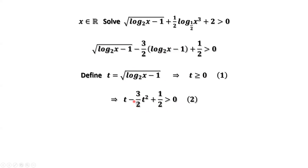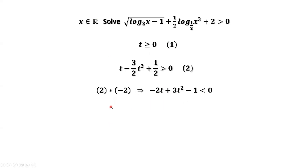We want to get rid of the denominator 2 on the left-hand side of this inequality. If we multiply negative 2 on both sides, we have negative 2t plus 3t squared minus 1 less than 0. Why do we change the direction of the inequality sign? Because we multiplied by negative 2, which is negative, so we have to change the direction.